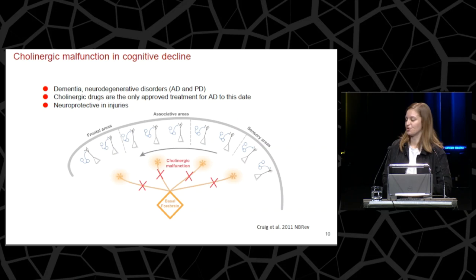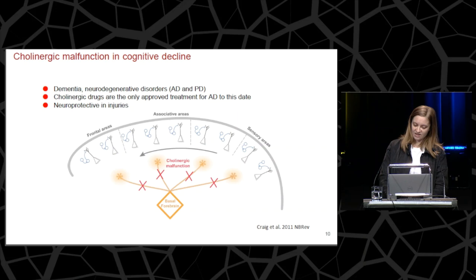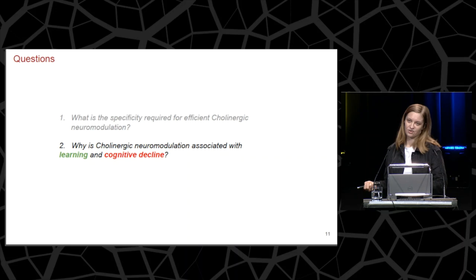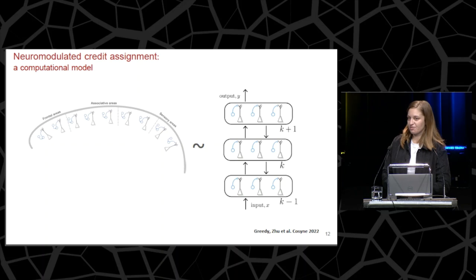On the flip side, cholinergic malfunction is also associated with cognitive decline, as it is the first system to break down in Alzheimer's dementia. To this date, cholinergic drugs are the only approved treatment for AD. We also know that it is neuroprotective in injuries, as cutting off cholinergic modulation prior to lesions can lead to worse cognitive impairments. Our second question is: why is the cholinergic system associated with both learning and cognitive decline?